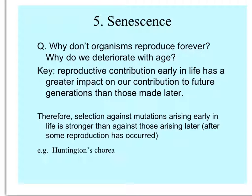Why don't organisms live and reproduce forever, and why do we deteriorate with age? The key is that reproductive contribution early in life has a greater impact on contribution to future generations than those made later. Not only do early reproducers contribute more to population growth, but organisms deteriorate as they age — this is senescence. This is in part because selection against mutations that arise early in life is stronger than against those that arise later, after some reproduction has already occurred.